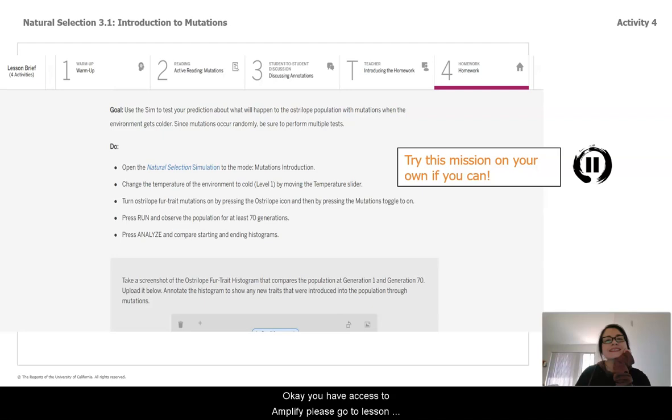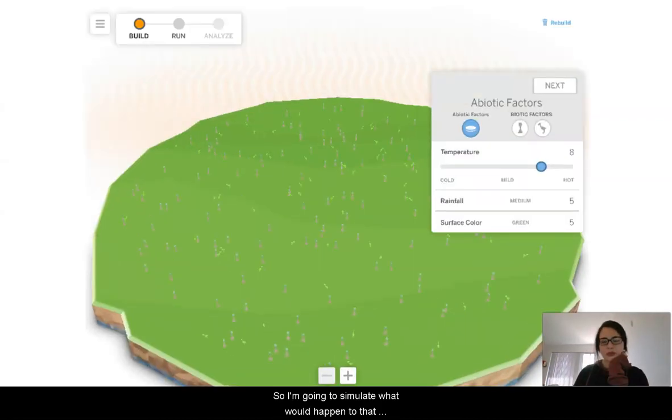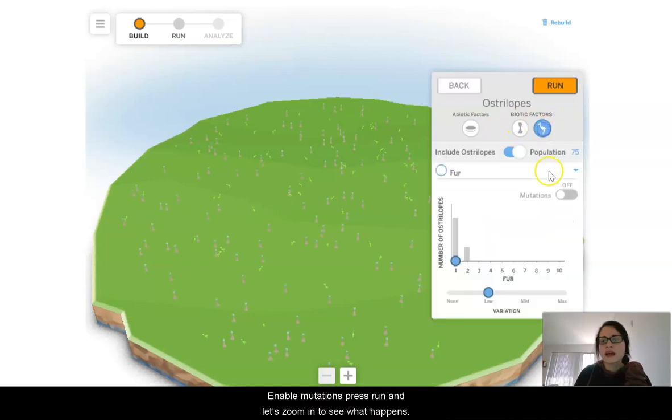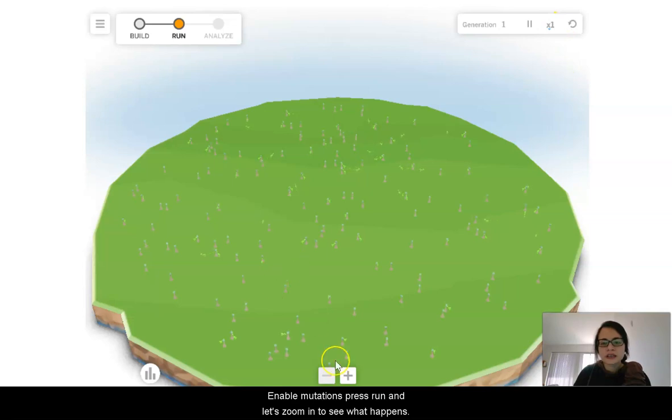Okay, if you have access to amplify, please go to lesson 3.1, Introduction to Mutations, page 4, and try out these missions if you can. So I'm going to simulate what would happen to that population B if their environment was set to cold and they had mutations on. So they started out in a fairly warm environment, going to set it to cold though. And I'm going to enable mutations, press run, and let's zoom in to see what happens.